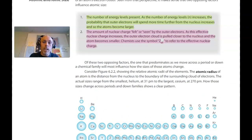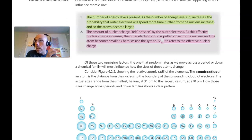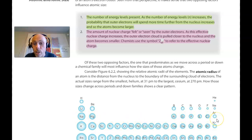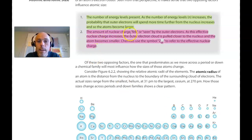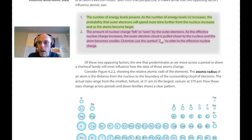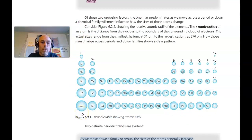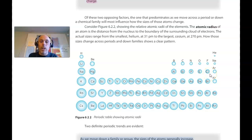The other factor that influences the size of atoms is effective nuclear charge, which comes into play as you go across a row or period. As you go across a row, the number of energy levels doesn't change — the denominator of that Coulomb's law simplification doesn't change — but the effective nuclear charge increases. As you go across a period, the effective nuclear charge increases, which creates a stronger attractive force on the valence electrons and pulls them in closer. As the amount of nuclear charge felt by the outer electrons increases, they're pulled closer to the nucleus and the atom gets smaller.